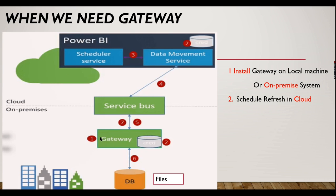The gateway acts as a connector between your cloud and the underlying data in your on-premise environment. On-premise is your local system or server that you are internally maintaining. If you have your data in a database or files, this gateway acts as an intermediary — it has a mechanism to securely transfer data from your internal system to the cloud. That is what the gateway does.